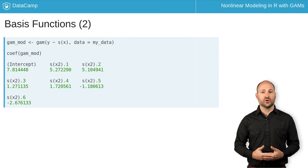When we fit a GAM with R, we can extract the coefficients just like we can for linear models using the coef function. Calling this function on a GAM model object will show the coefficients of each of the basis functions of the model. You can see that even a simple one smooth model has many coefficients.